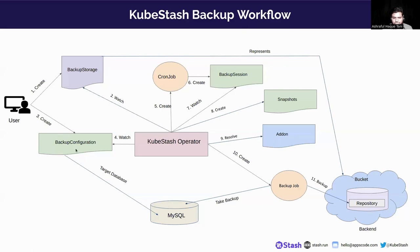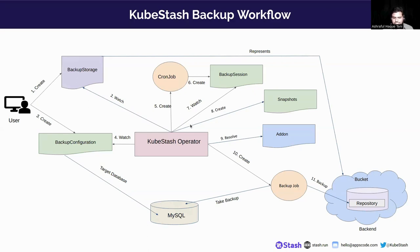Following this, we create a BackupConfiguration, which is another CRD that encapsulates details about the target database, backend reference, and sessions — specifying the repositories of the backend where a snapshot will be saved, and information about the cron job associated with the session. For each session, a cron job is created and triggers a backup session at regular intervals. Each cron job in turn generates a backup session, and a snapshot is created for the repository specified in the session.